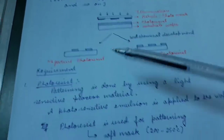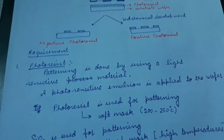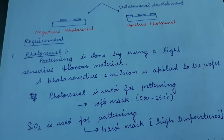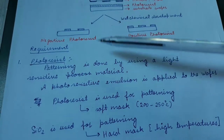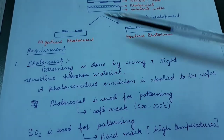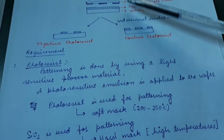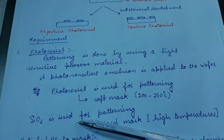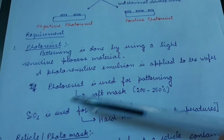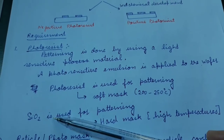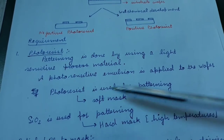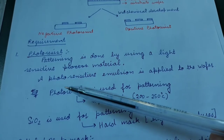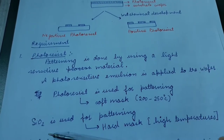As we have already discussed, the requirement for photolithography is first of all photoresist. Photoresist is nothing but a photosensitive polymer which softens or gets hardened in the presence of illumination. Sometimes when we are working at higher temperatures, instead of photoresist we use silicon dioxide for masking the substrate — such a mask is called a hard mask. At lower temperatures we use a photoresist, and at higher temperatures we use silicon dioxide.